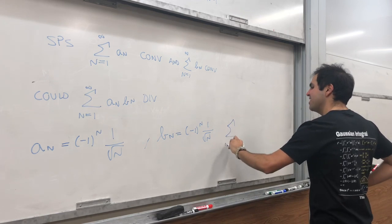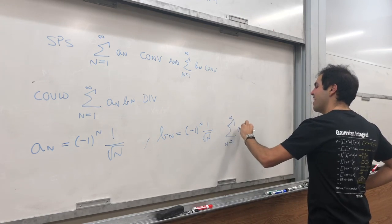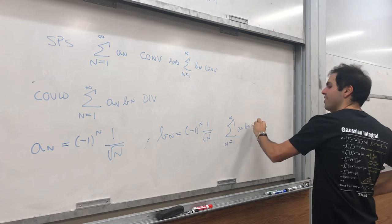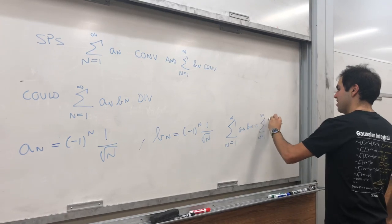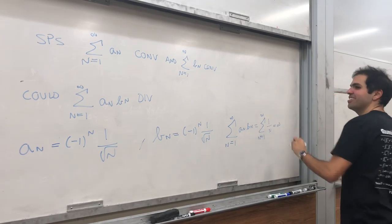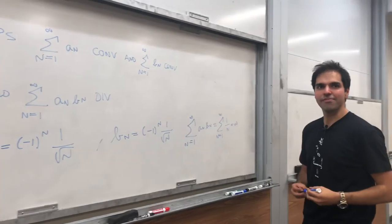And then sum, one to infinity of a_n b_n. Well, it's this squared, which becomes a harmonic series. Diverges. So it could, it could diverge.